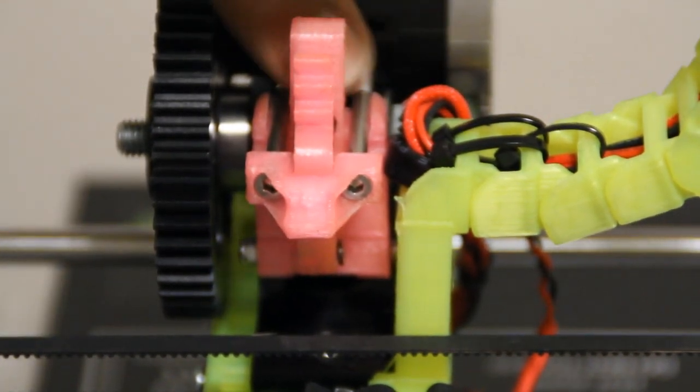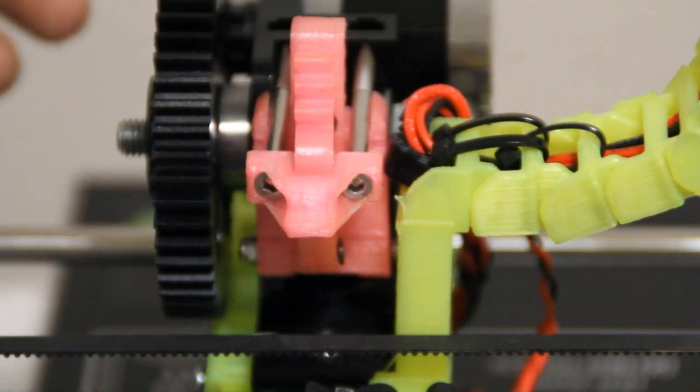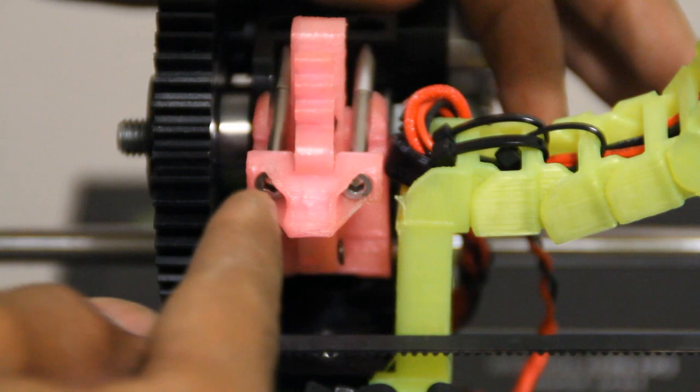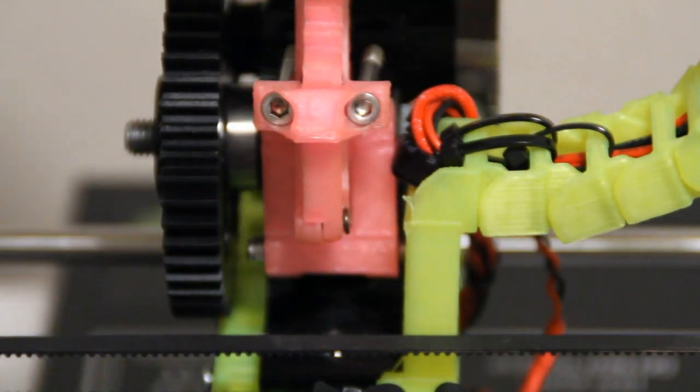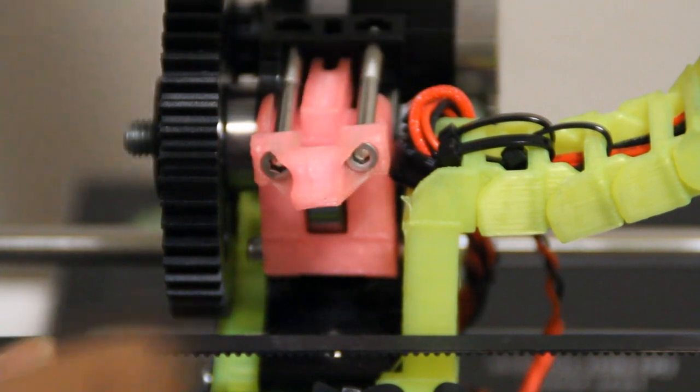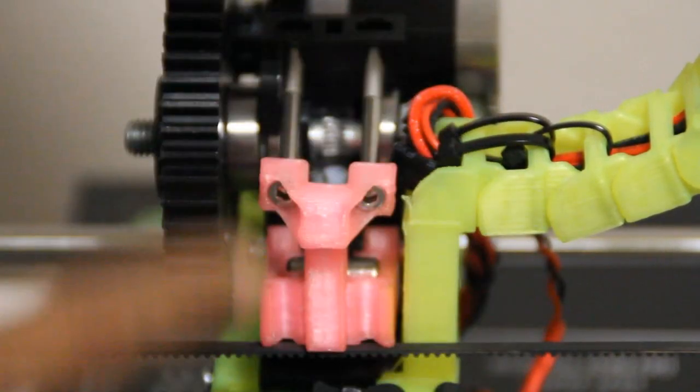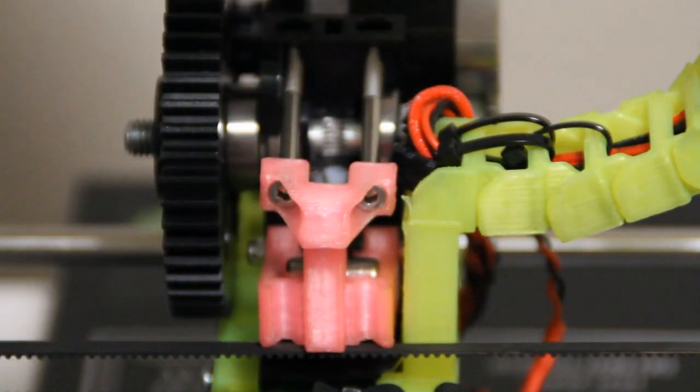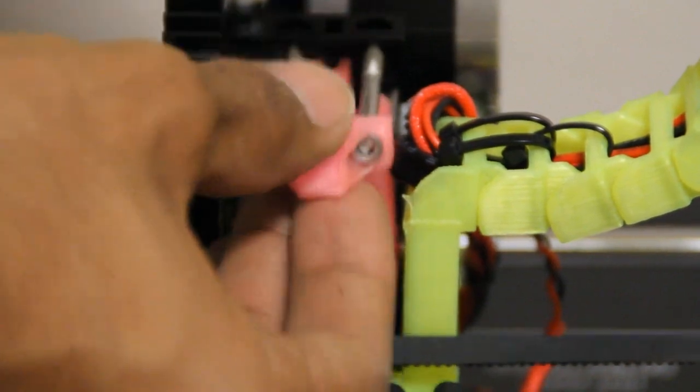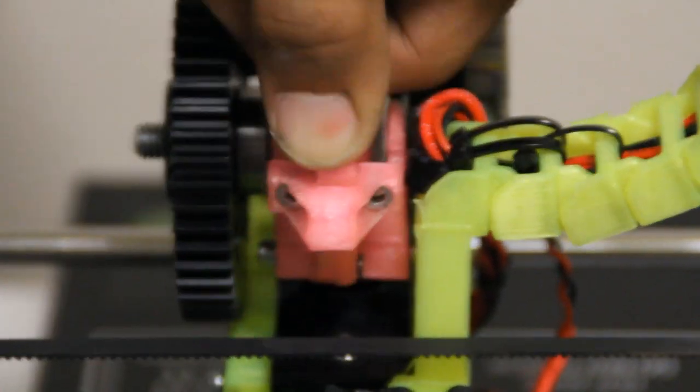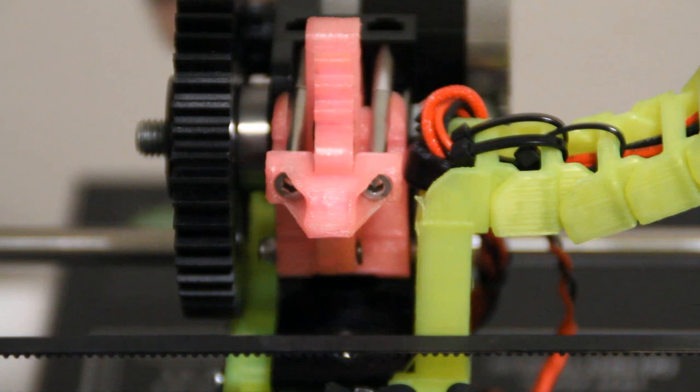Now your extruder has constant tension without really needing much maintenance. There's no screws, no manual tension. You can even adjust the tension still, but if you need to change the filament out, you move this up, pinch, remove, and this will fall back and allow you to change your filament. As soon as you're done, push this up, push this back, put that back in, and you're done.